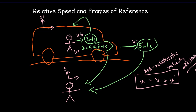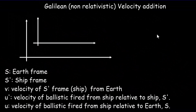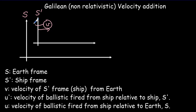Very simple, but we want to define these frames of reference and variables because we want to carry them forward into relativistic physics. To reinforce: we have an S frame and an S prime frame. The S prime frame is moving with velocity V relative to the S frame. Some other moving object will have velocity U prime in the S prime frame and velocity U in the S frame.